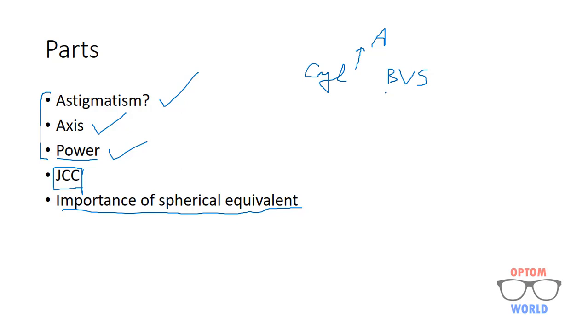Let's take an example. You have done BVS refraction and the best vision sphere was plus 2, let's suppose. With plus 2, the vision was 6 by 12. There was no further improvement.